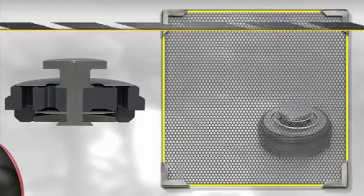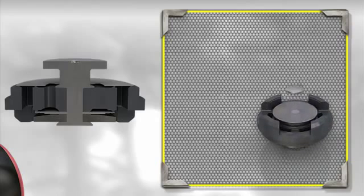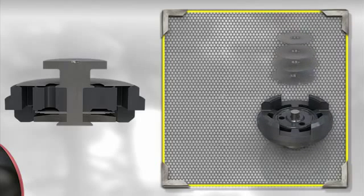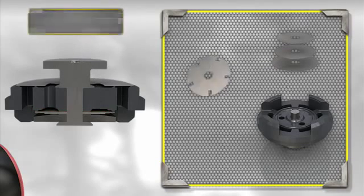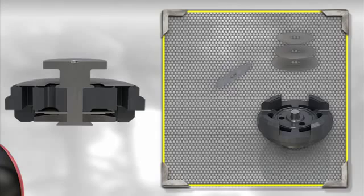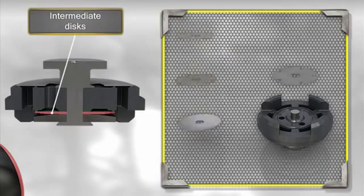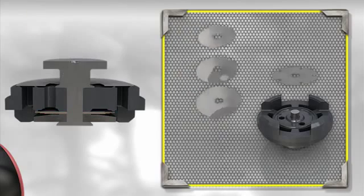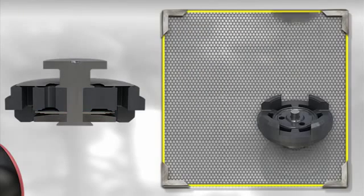In twin tube shock absorbers, we also find a compression valve at the base of the working chamber tube. The configuration of this valve is similar to the piston valve, but inverted. It is also smaller in size, because its design takes into account the damping force provided by the coil springs during compression, and other elastic elements of the suspension system.